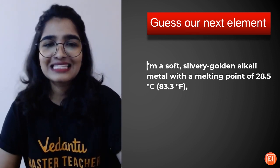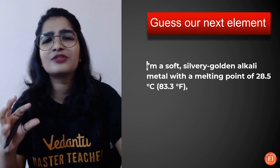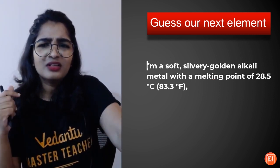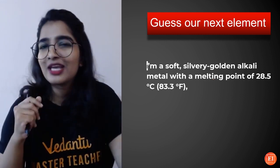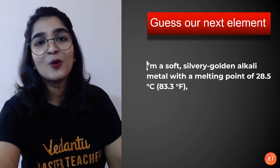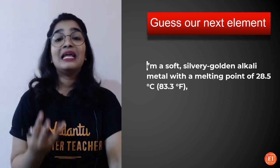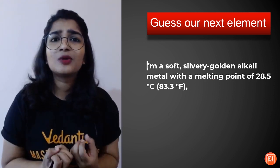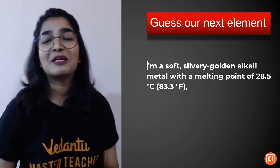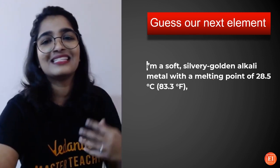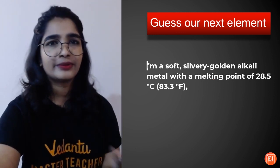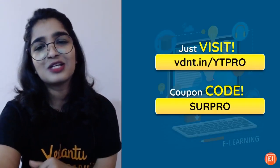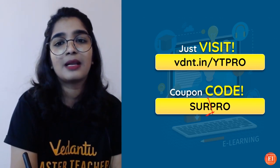For our next element, here's a hint: I am a soft, silvery-golden alkali metal with a melting point of 28.5 degrees Celsius — a very low melting point. Can you guess the next element? Let me know in the comment section! Also let me know how the session was, whether it was useful, and whether phosphorus is your favorite element. Visit vdnt.in/ytpro and use the coupon code SURPRO.